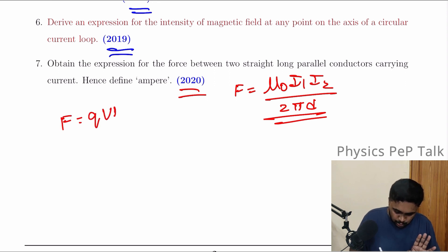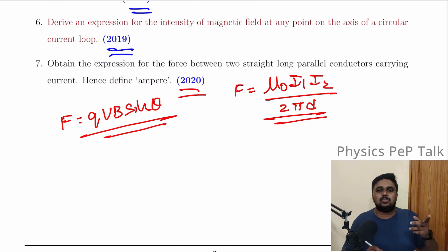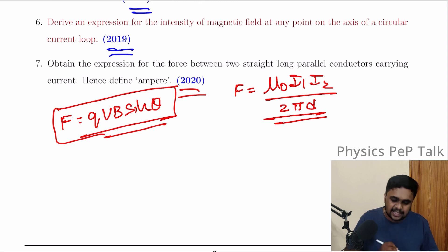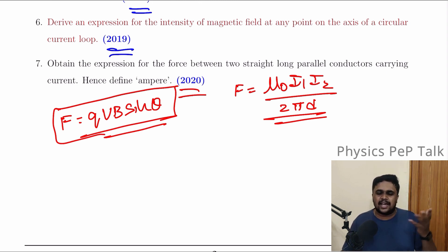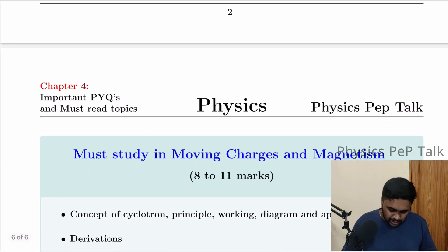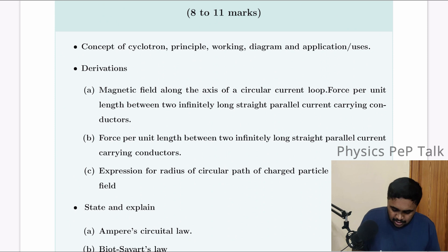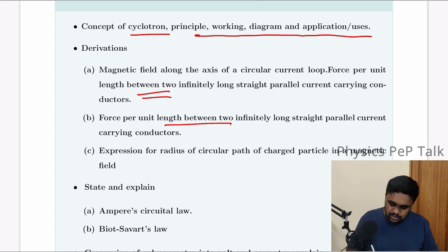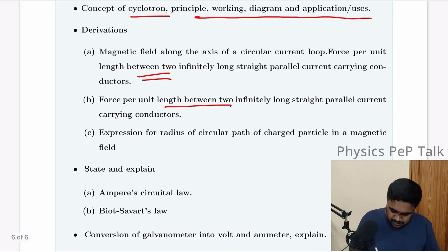F is equal to QVB sin theta — that is for the circular or helical path. Now, must-read topics: concepts of cyclotron — principle, working, diagram, application, and uses.